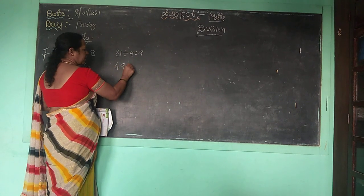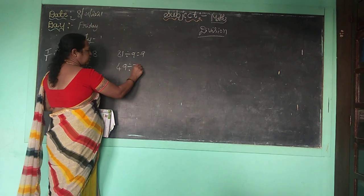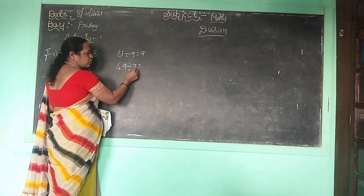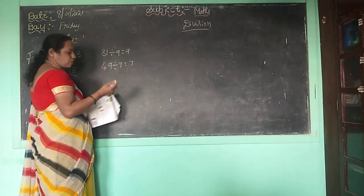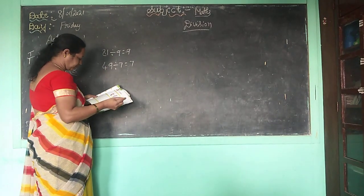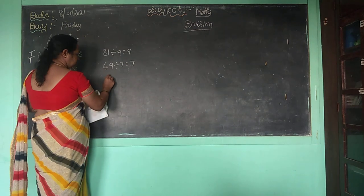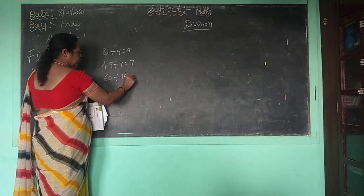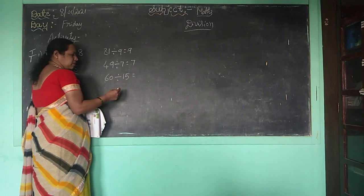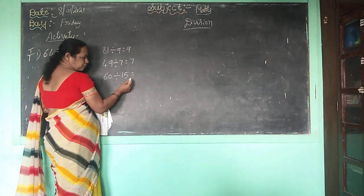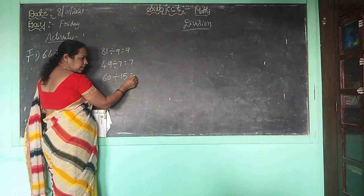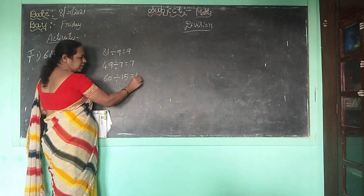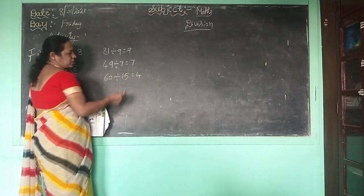49 divided by 7 — 7 sevens are 49. Next, 60 divided by 15. You know the 15 times table: 15 ones are 15, 15 twos are 30, 15 threes are 45, 15 fours are 60.